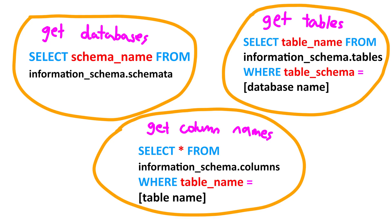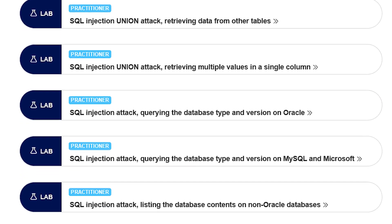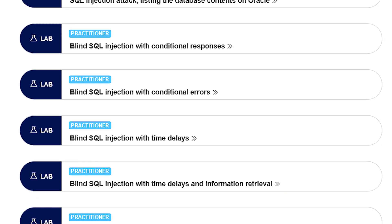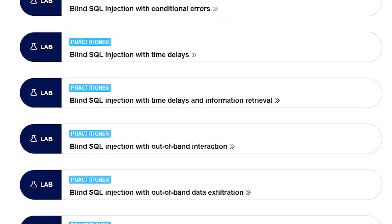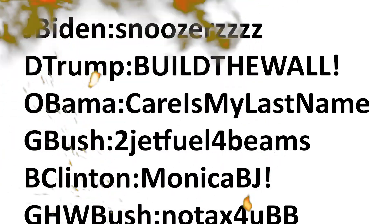Also, if these commands don't work for you, that's okay. Each SQL injection is different, and how you format your commands depends heavily on how you're getting the output displayed back to you. Once we've found what we're looking for, all we need to do is make two final queries. And boom — just like that, we've hacked the CIA and exposed all the presidents' passwords!